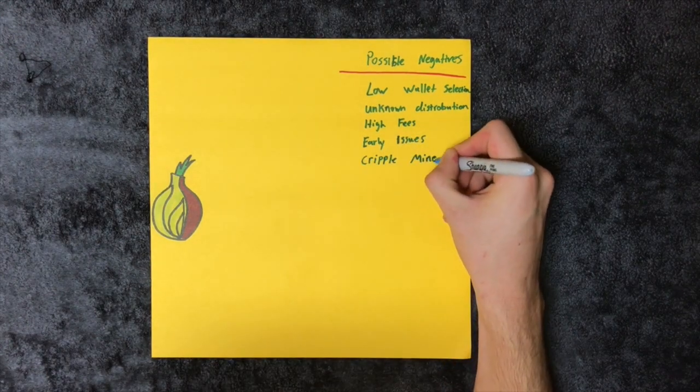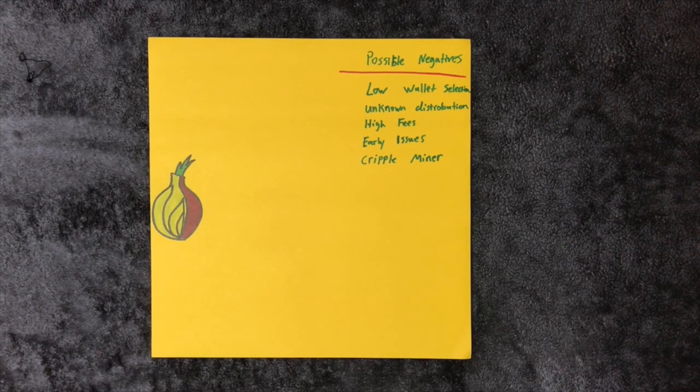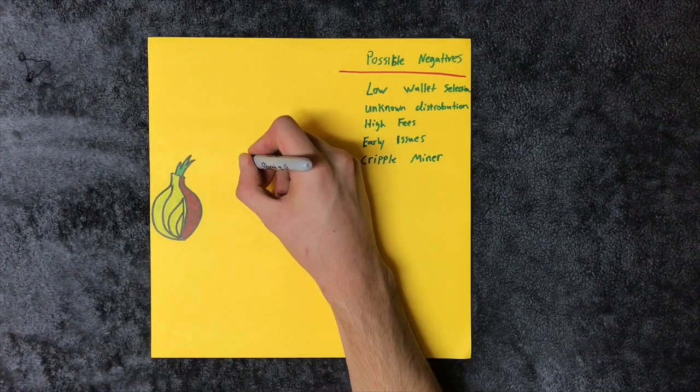The Crippled Miner scandal is a story that still haunts Monero to this day. To understand what happened, we're going to have to look at Monero's history.